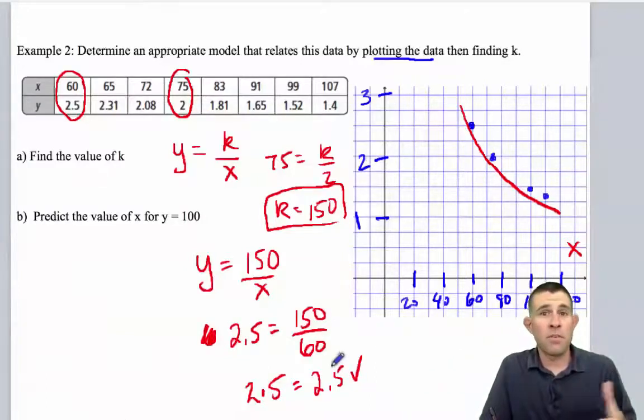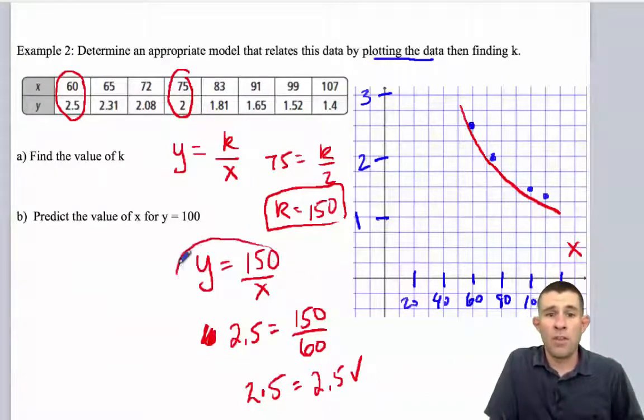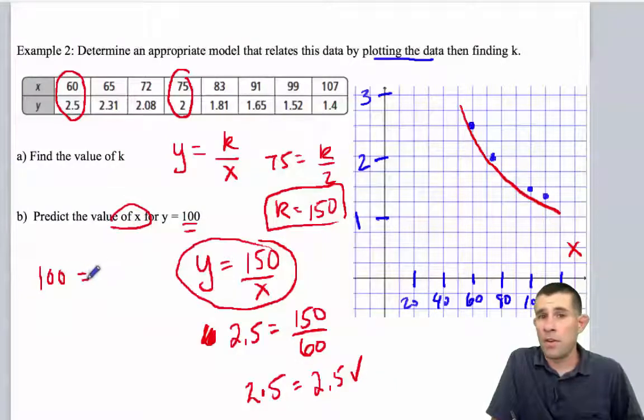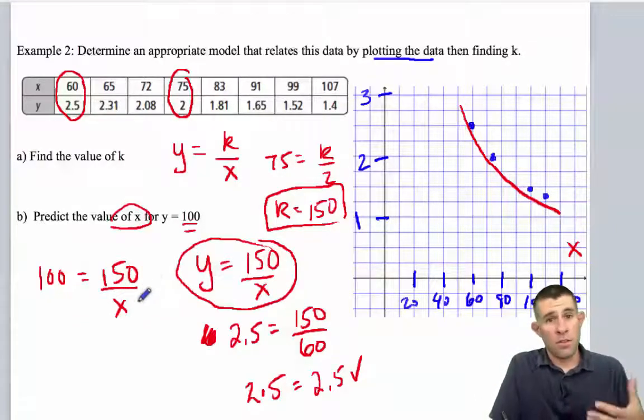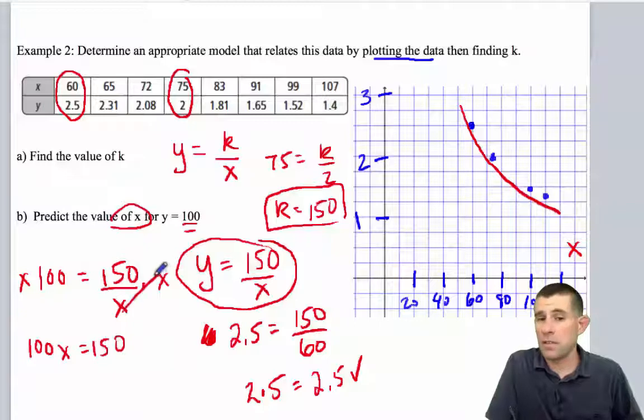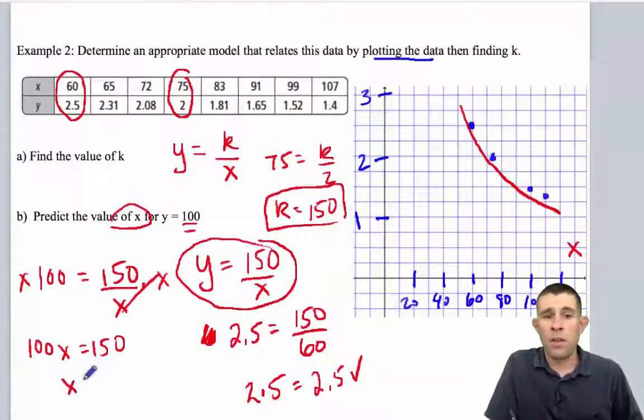And now I'm going to use this equation to predict the value of x when y is 100. So let's substitute 100 in for y. And I have 150 over x. And now what I need to do is solve for x. So I'm going to start by multiplying both sides by x. So now I have 100x is equal to 150, because these x's will cancel out. Divide both sides by 100. And x is equal to 150 divided by 100, or 1.5.